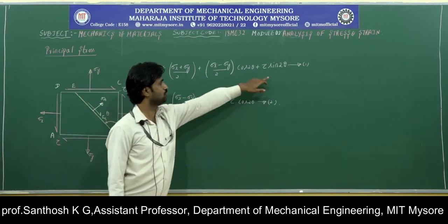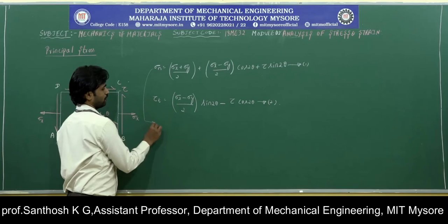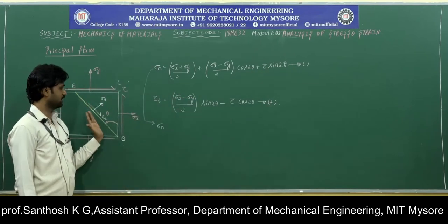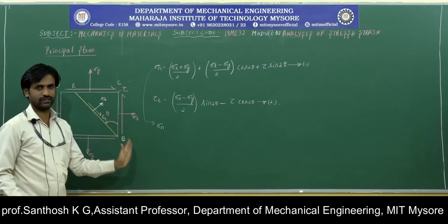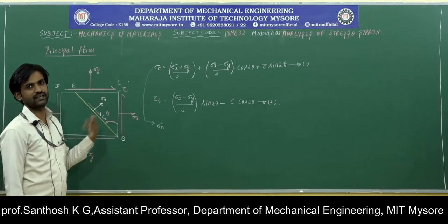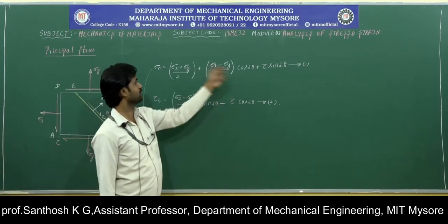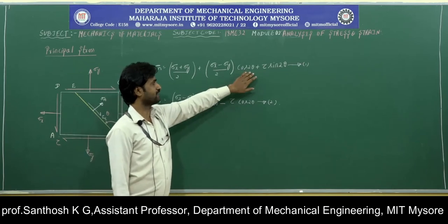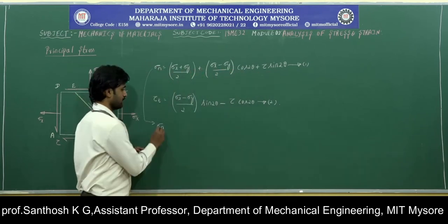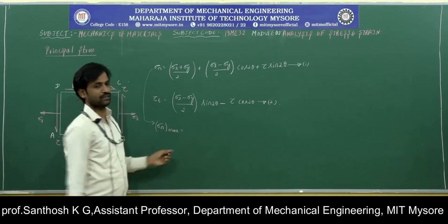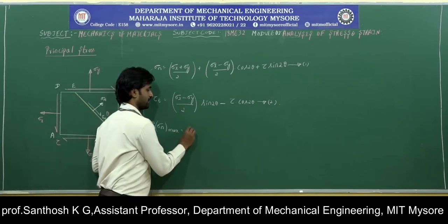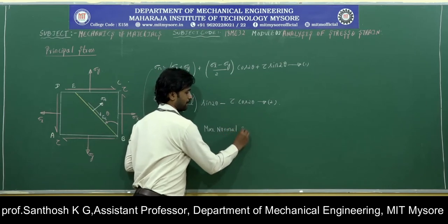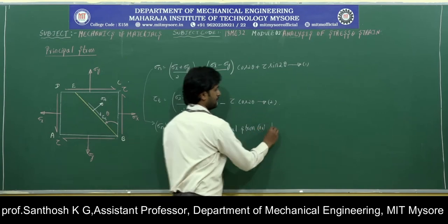Observing these two equations, we can vary the value of sigma n by changing the angle theta — setting it to 0, 45 degrees, 90 degrees, or any angle. By changing theta, sigma n also changes, and at a certain angle, sigma n will become maximum. That maximum value of normal stress is called sigma 1, also known as the maximum normal stress or maximum principal stress.